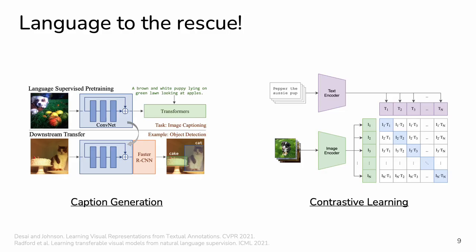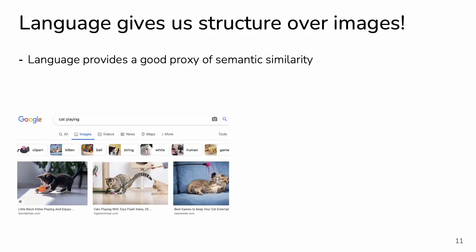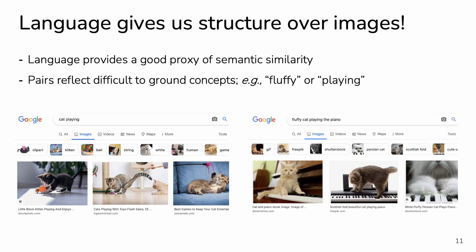Language provides us with a rich learning signal, as a caption tells us exactly what's in the image. Recent work has demonstrated amazing generality by training image encoders through captioning and image-text contrastive learning. The success of such approaches made us wonder if we could use language in a different way. We observe that captions not only tell us what's in the image — they also relate different images to each other, as similar images often have similar captions. Furthermore, slight modifications of the caption correspond to large variations in the image. For example, adding the word 'fluffy' to the caption changes what the images look like, even if the concept 'fluffy' itself may be difficult to ground.